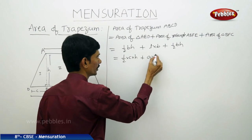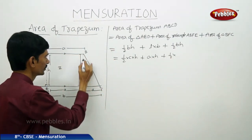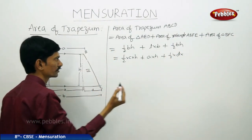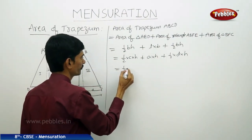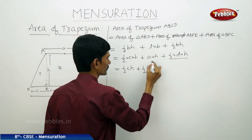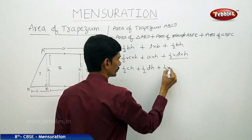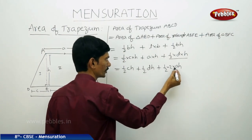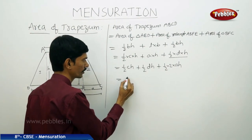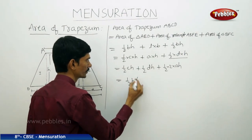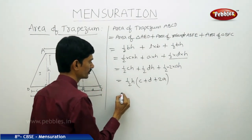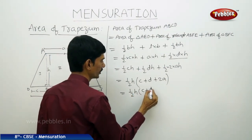We can write A times H for the rectangle, plus half times the base of triangle BFC, which is FC equals D, times height H. This gives us half CH plus AH plus half DH. Taking half H as the common factor from all three terms, we get one half H times (C plus D plus 2A).